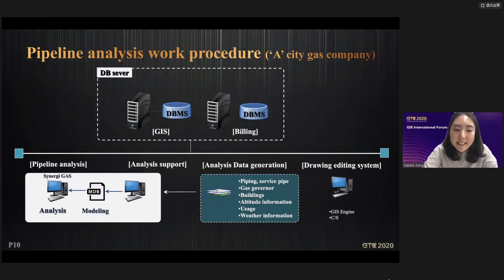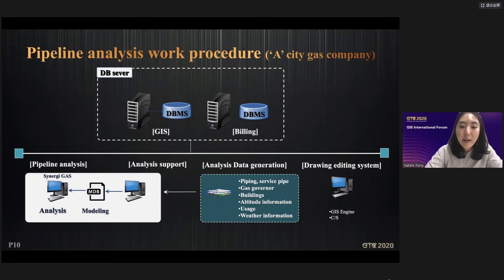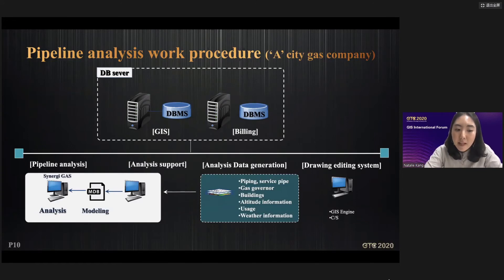We analyzed the pipeline analysis work procedures at many city gas companies in Korea. The basic data for the analysis are GIS-based facility information such as pipes, regulators, and valves, as well as customer gas usage information from the city gas company. The data model consists of basic information, connectivity, and properties of each facility. The file format used is the MDB file format.